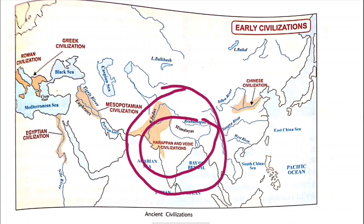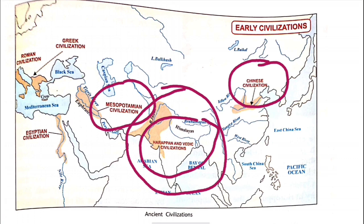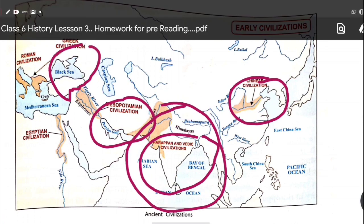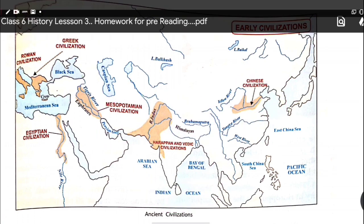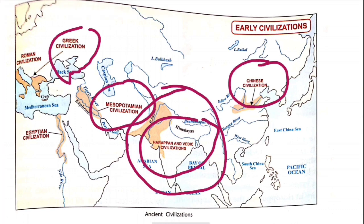यहाँ पर आप ancient civilizations का map देख सकते हैं। इसमें Greek Civilization, Roman Civilization और Egyptian Civilization — इन सभी के नाम और locations दिखाए गए हैं।